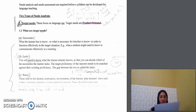So what are the target needs? We'll think about three criteria. The first one: the necessities. What the learners have to know, or what is necessary for him or her to know in order to function effectively in the target situation.